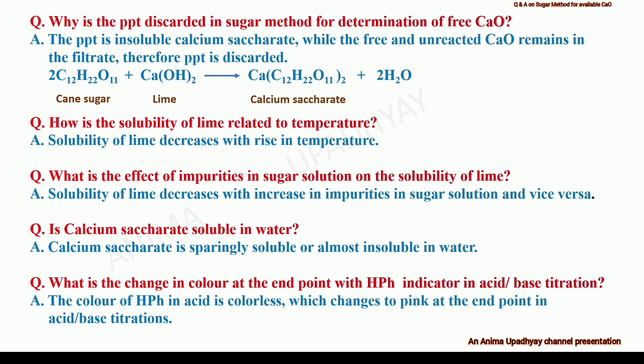Why is the precipitate discarded in the sugar method for determination of free calcium oxide? The precipitate is insoluble calcium saccharate, while the free and unreacted calcium oxide remains in the filtrate. Therefore, the precipitate is discarded. How is the solubility of lime related to temperature? Solubility of lime decreases with a rise in temperature. What is the effect of impurities in sugar solution on the solubility of lime? Solubility of lime decreases with increase in impurities in the sugar solution and vice versa. Is calcium saccharate soluble in water? Calcium saccharate is sparingly soluble or almost insoluble in water. What is the color change at the end point with phenolphthalein indicator in acid-base titration? The color of phenolphthalein in acid is colorless, which changes to pink at the end point when alkali is added to the acid solution.